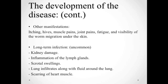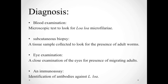Other manifestations of this disease can include itching, hives, muscle pains, joint pains, fatigue, and visibility of worm migration under the skin. Individuals with long-term infection can also develop kidney damage, inflammation of the lymph glands, scrotal swellings, lung infiltrates along with fluid around the lungs, and scarring of the heart muscle.